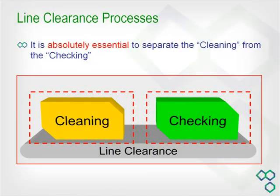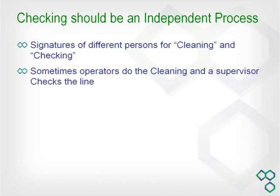We've put together a diagram to illustrate that. The whole of line clearance consists of a cleaning phase and a checking phase. Checking also needs to be an independent process. For any individual item of equipment, I would always want to see the signatures of different persons for the cleaning and for the checking. If somebody has cleaned the cartoner to the best of their ability, I would want to see the checking carried out by somebody else — preferably somebody knowledgeable about the line. That's essential.